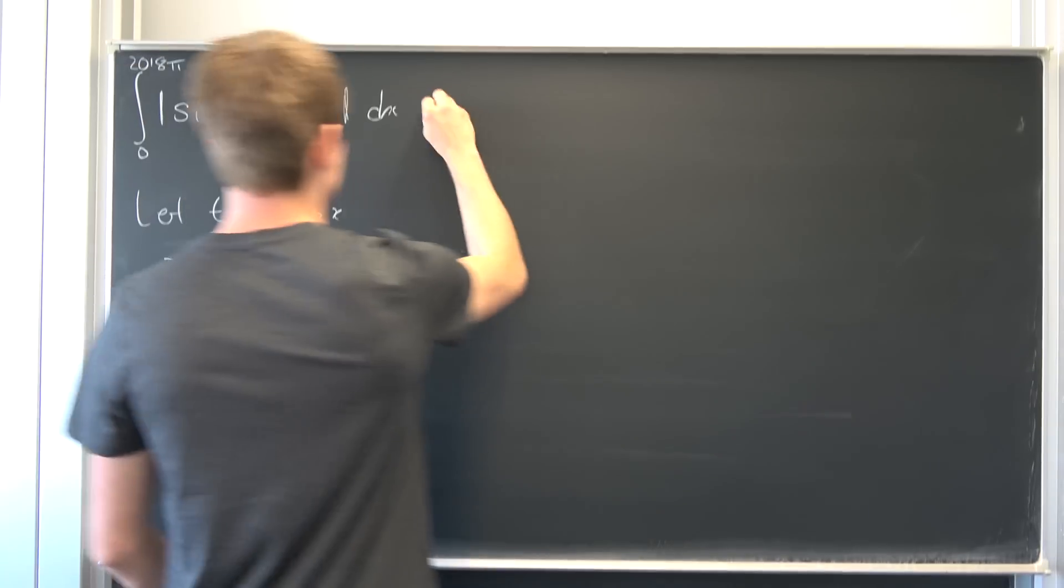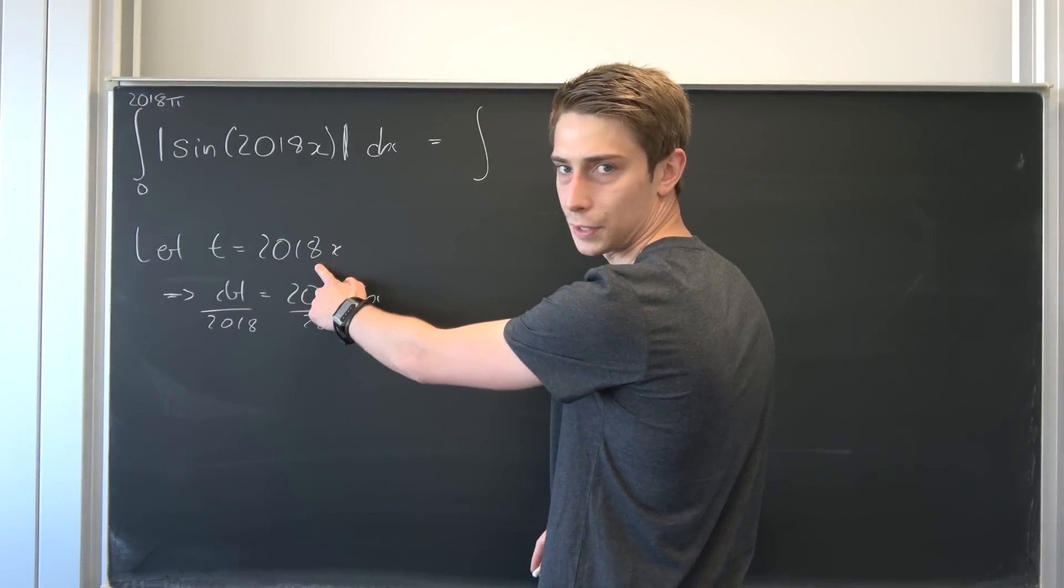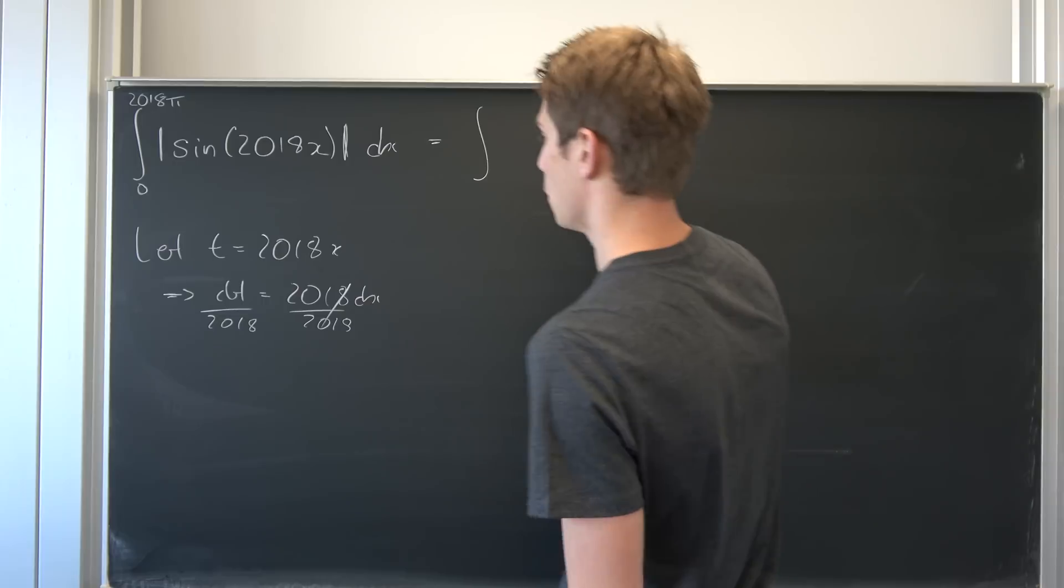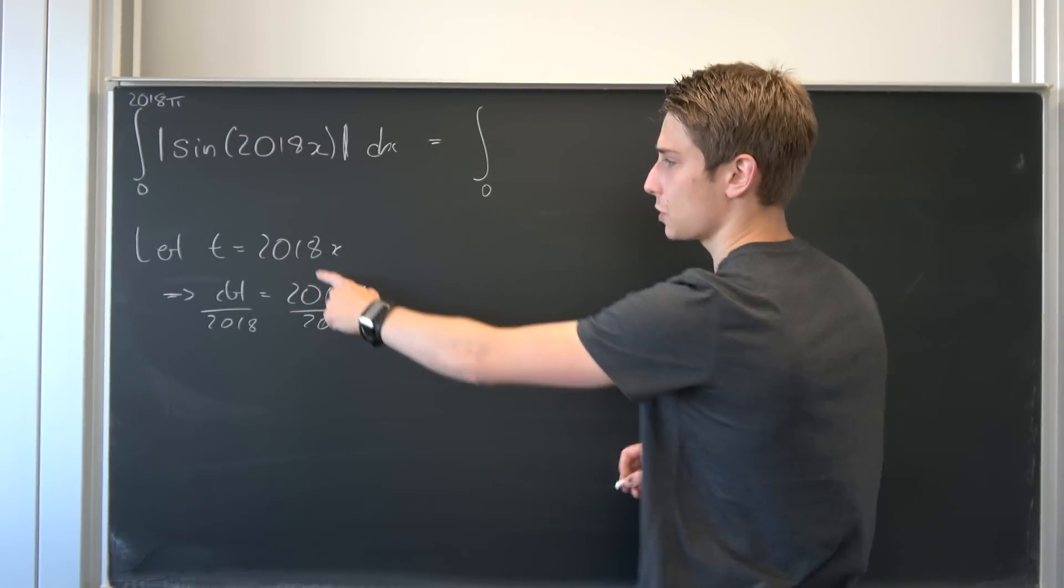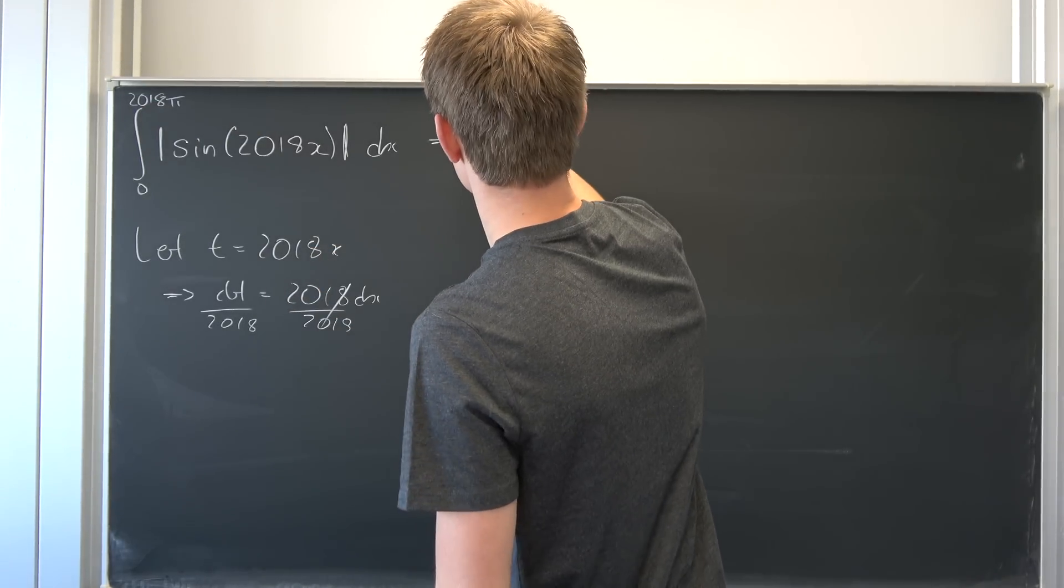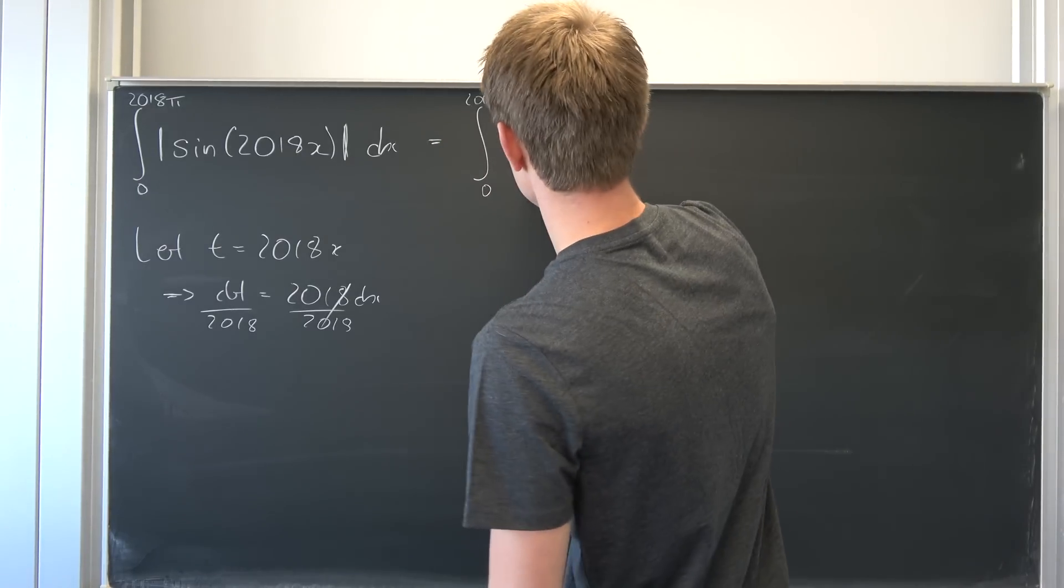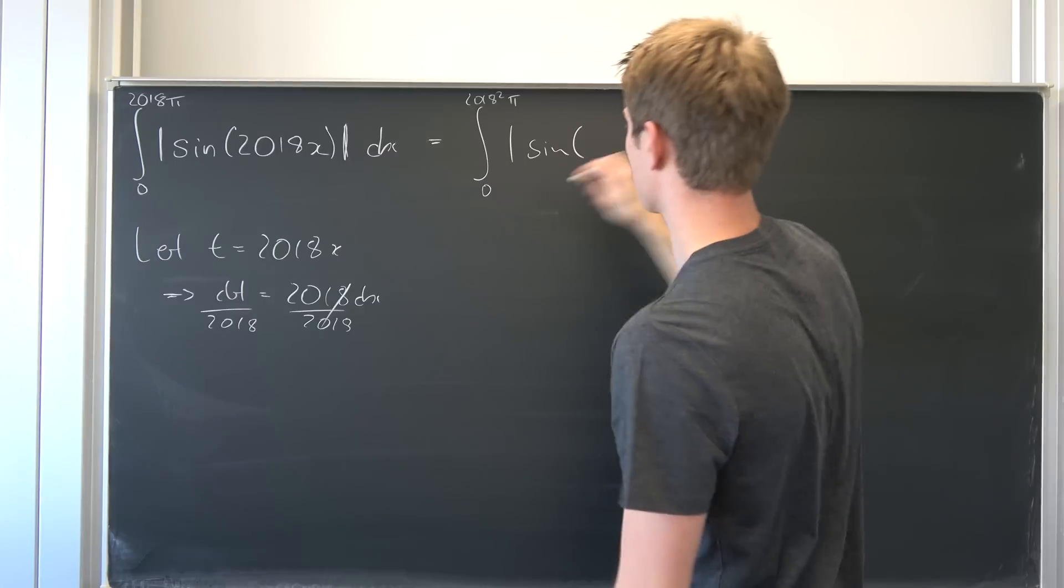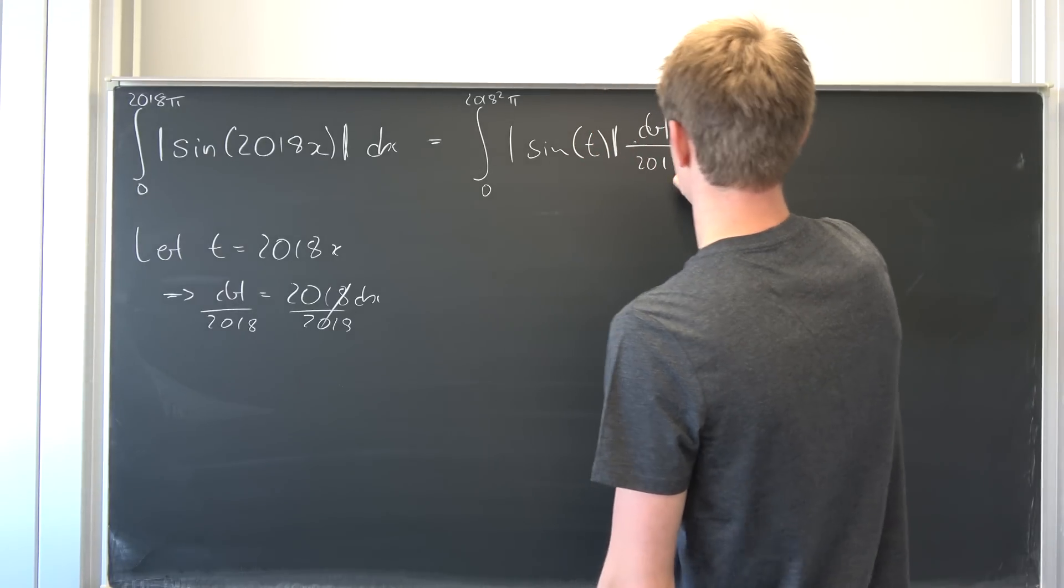Now we can plug all of this new stuff in. So for the upper and lower bounds, the new ones, we have if we plug x equals 0 into here, well that's just going to be 0. And if we plug 2018 times pi into here, this is going to be 2018 squared times pi. And also we have the absolute value of sine of t in this case, and dt over 2018.